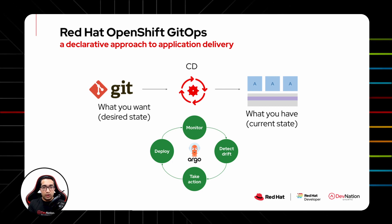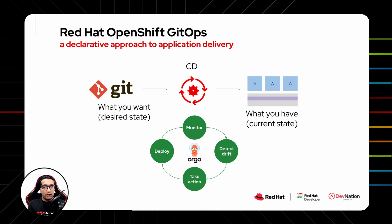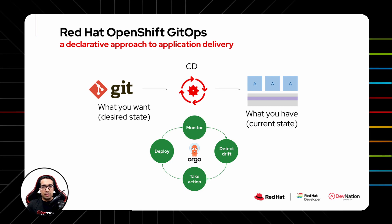In case of configuration drifts, Argo CD can automatically reconcile the changes. This immensely helps the ops teams to keep the application configuration consistent. Red Hat OpenShift GitOps is an OpenShift add-on which uses Argo CD to implement GitOps workflows for continuous delivery of applications.